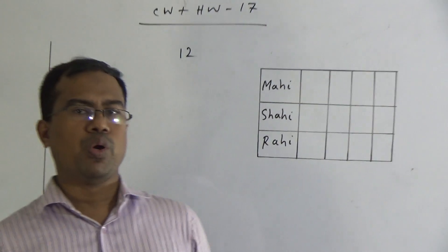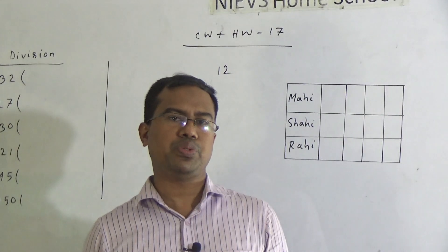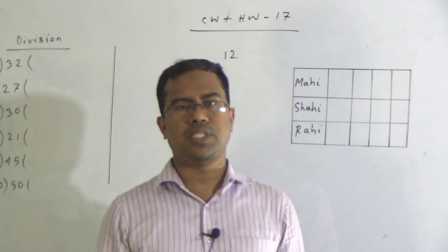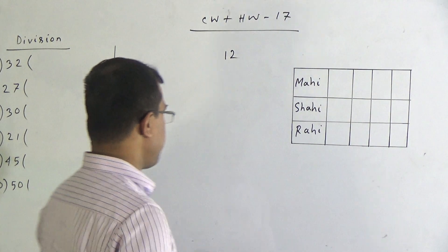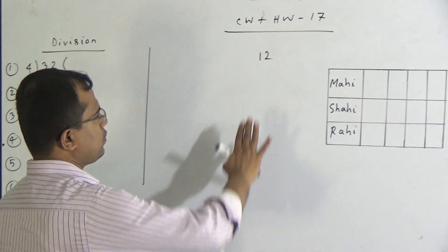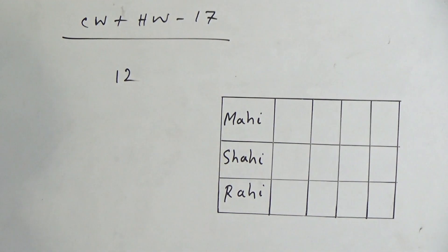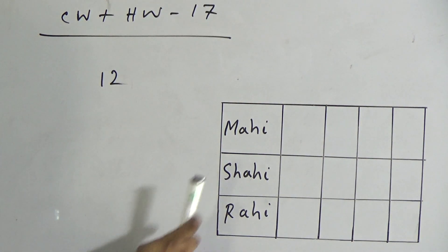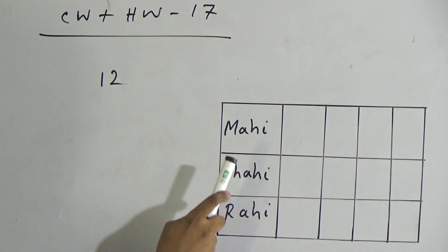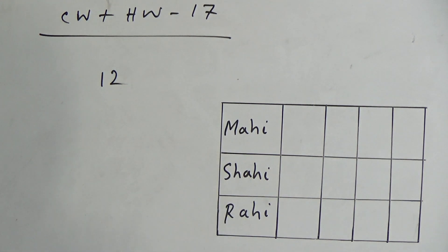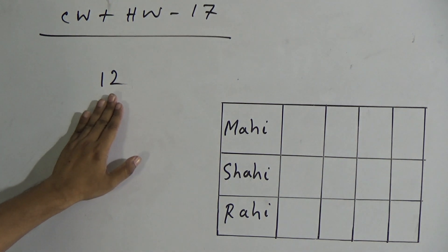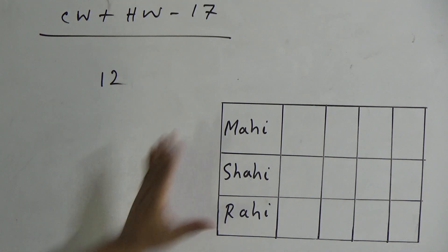At first, we want to introduce division — that means, we want to know what is division. Dear students, consider that I have 12 chocolates and there are 3 students in my class. The names of the students are Mahi, Shahi, and Rahi. I want to distribute these 12 chocolates among my 3 students equally.